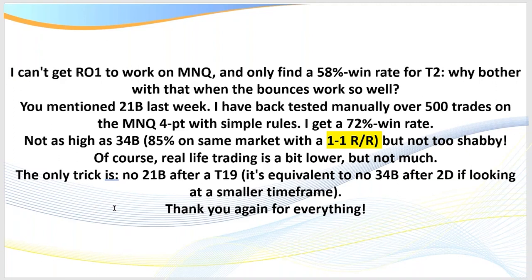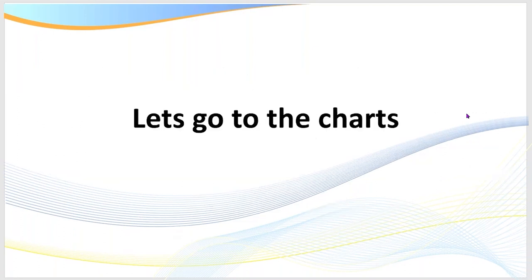Because the markets are fractal, you can have a 34B set up on an entry chart, on anchor chart one, and on an even higher timeframe. The win-loss ratio on virtually any timeframe you're trading is going to be around the same because the markets are fractal. If you enter on your entry chart a 34B that's setting up on a higher timeframe, you can have a much larger return — that's how you hit your profit target quicker.